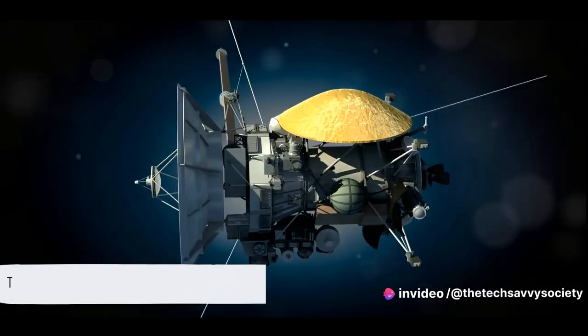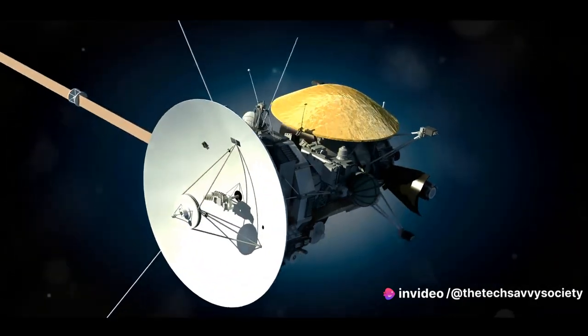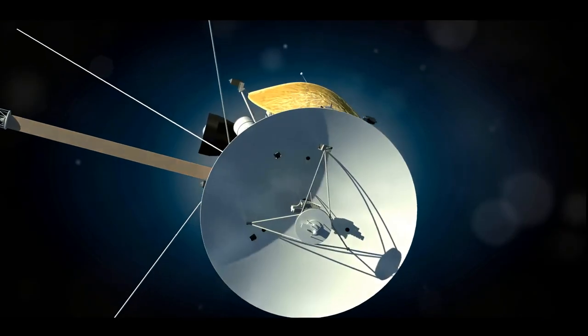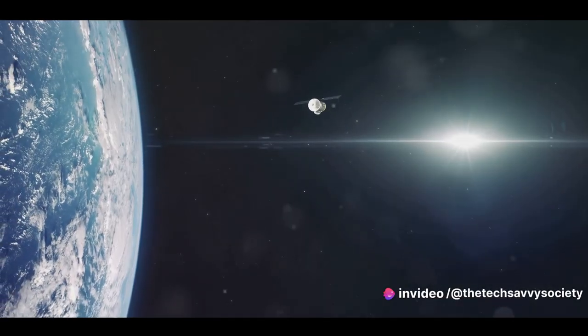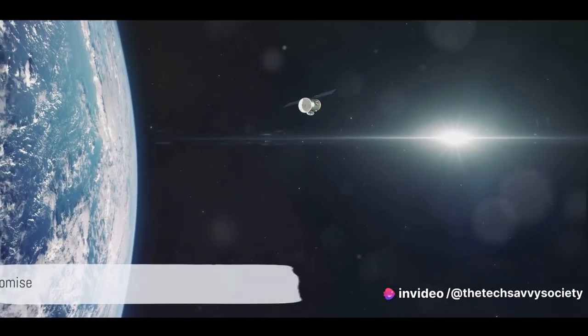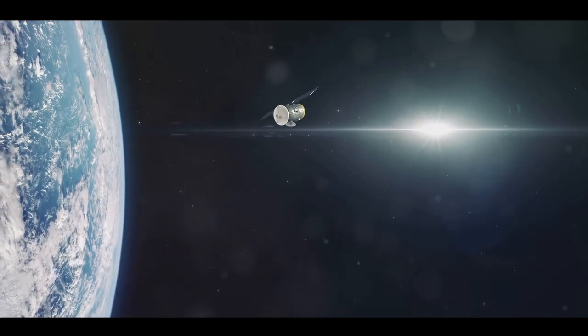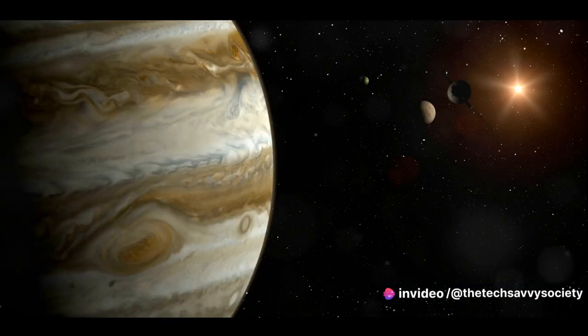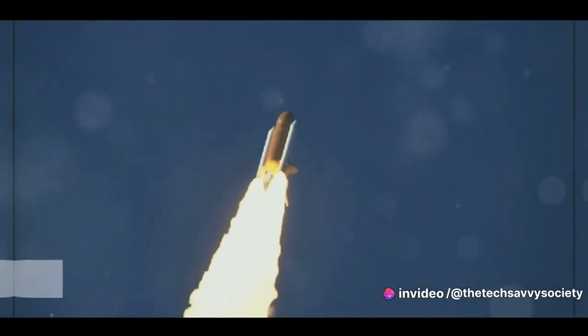However, space exploration is not without its challenges. A series of planned commands sent to Voyager 2 on July 21 caused the antenna to point two degrees away from Earth. This might not sound like much, but it compromised the spacecraft's ability to send and receive signals, putting its mission at risk.